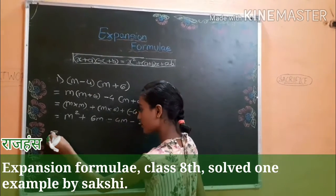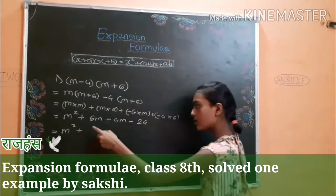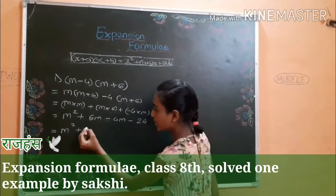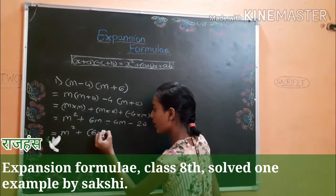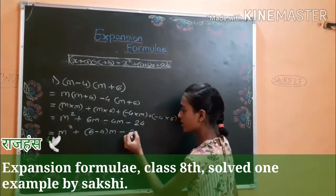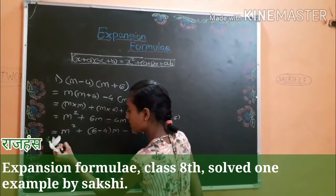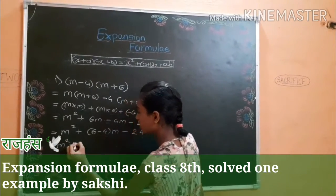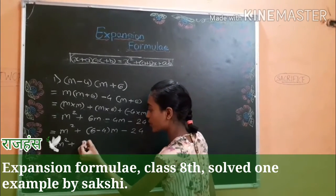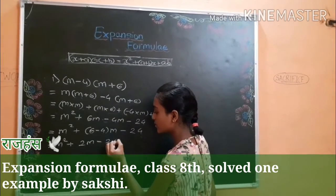Then m square plus 6 minus 4 is equal to 6 minus 4m minus 24. m square plus 6 minus 4 is equal to 2, so 2m minus 24.